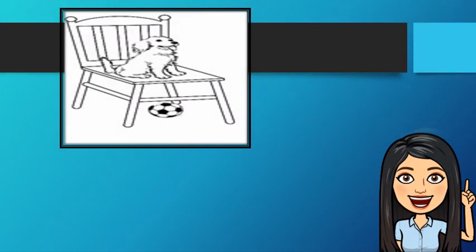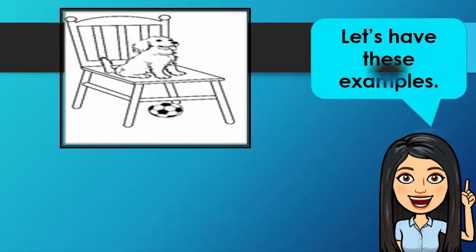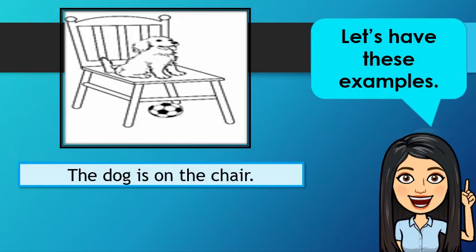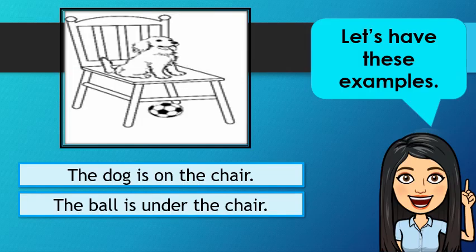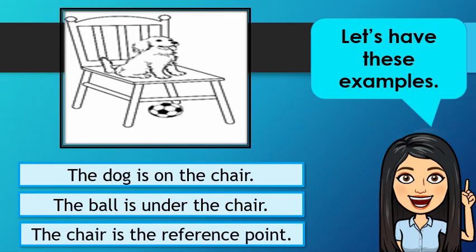How about in this picture? Can you locate the position of the dog? Very good — the dog is on the chair. How about the ball? Correct — the ball is under the chair. What do you think is the reference point? Very good — the chair is the reference point.